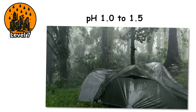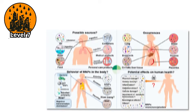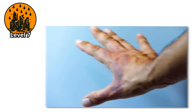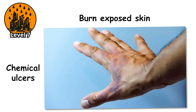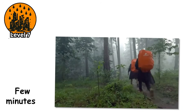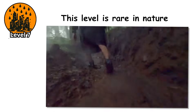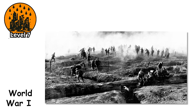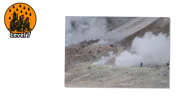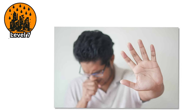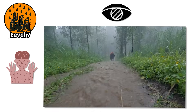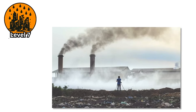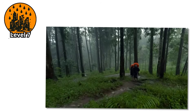Level 7. pH 1.0 to 1.5. At this point, acid rain stops being a background hazard — it becomes a direct threat to human tissue. Rain with a pH near 1.0 is chemically similar to battery acid: not as thick, not as hot, but acidic enough to burn exposed skin, cause chemical ulcers, and permanently damage eyes. Just a few minutes in open weather is enough to leave injuries requiring medical treatment. In military history, World War I saw the use of chemical agents like sulfur dioxide and phosgene gas. Combined with moisture in the air, they created hyperacidic mist that burned skin and lungs. Soldiers described coughing until their throats bled, with blistering and blurred vision after only brief exposure.